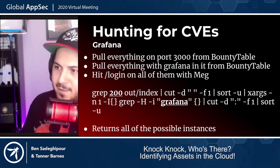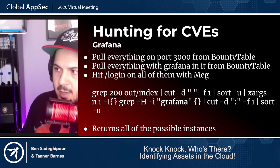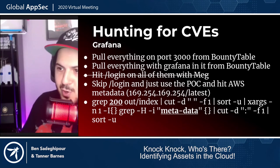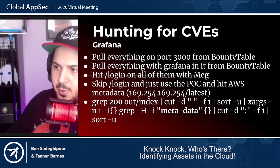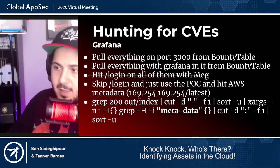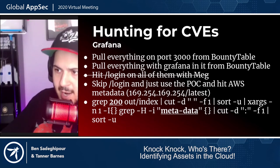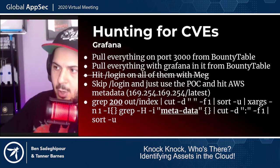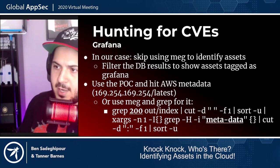Once we had the exploitation path, we pulled everything on port 3000 in our bounty table — the bounty targets we were monitoring — and pulled out everything that could be Grafana. We ran it through Meg looking for everything that came back as 200 with the keyword Grafana. We even got creative: we skipped the login portion entirely and gave it a POC directly — hitting the AWS metadata IP for the latest endpoint — and if the keyword 'metadata' came back in the response, that confirmed a vulnerable instance. We were abusing an SSRF to hit an internal IP on AWS. This led to finding about 11 or 12 different vulnerable instances of this for a single company, giving us a ton of good bounties.